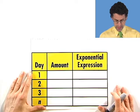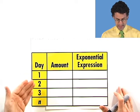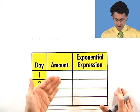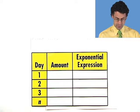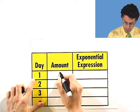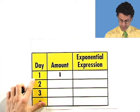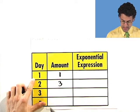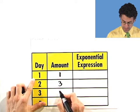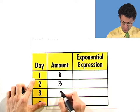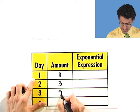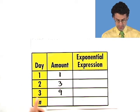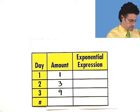So let's make a little chart where we have the various days and the amount that we get. So the first day, with this penny option, we get one penny. The next day, we get three pennies. And on the third day, we get another three times what we previously got, which would be nine pennies. Okay. Now, do we see a pattern?